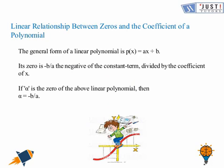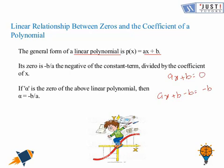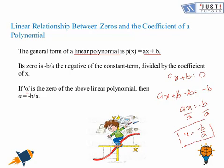Now we are moving ahead with our topic, which is about the relationship between zeros and the coefficients of a polynomial. First of all, we are going to discuss the linear polynomial. Say there is a linear polynomial. To find the zero of this polynomial, we need to equate it to zero. We keep the variables on one side of the equals sign and constants on the other side, giving ax equals minus b. Dividing both sides by a gives x as minus b by a. So the zero of this polynomial is minus b by a. If we denote the zero by alpha, then alpha equals minus b by a.